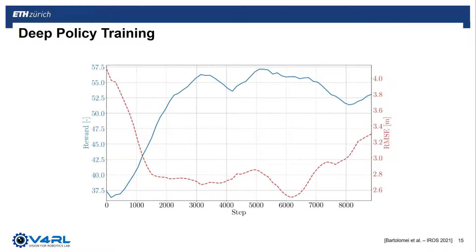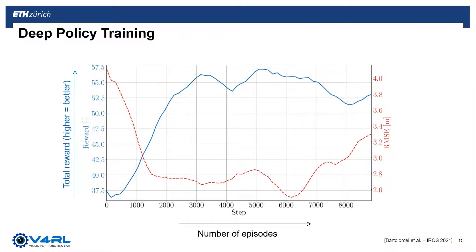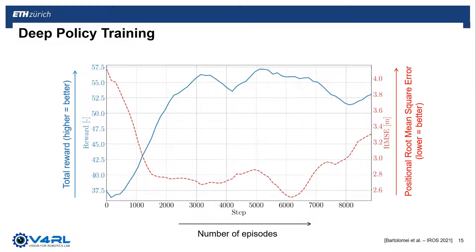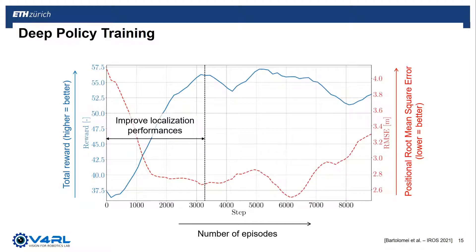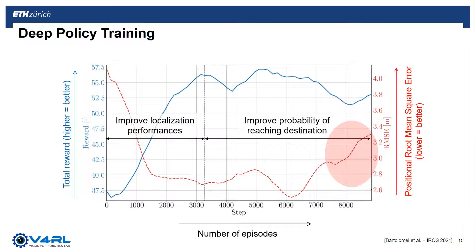In this plot, we show the performance of the policy over the training episodes. Along the horizontal axis, we report the number of episodes, while on the left axis, we report the total reward, where higher values mean better performance. On the right side, the positional root mean square error is indicated — in this case, the lower the value, the better the performance. In the plot, we can identify two main phases. In the first one, the policy quickly learns which semantic classes are the best for state estimation, with rapid improvements in both the total reward and RMSE. In the second part, the total reward remains constant while there are bigger fluctuations in the state estimation error. In this phase, the policy is able to fly the robot more frequently to the destination. As a consequence, the reward does not drop despite an increase in RMSE in the final episodes.